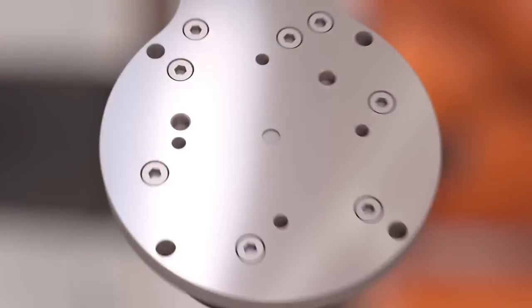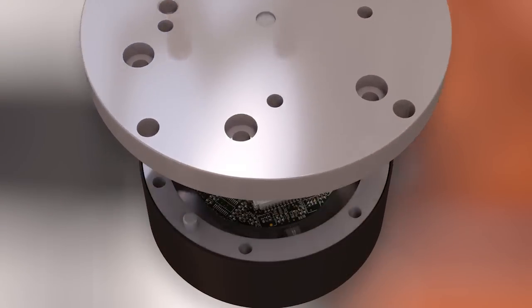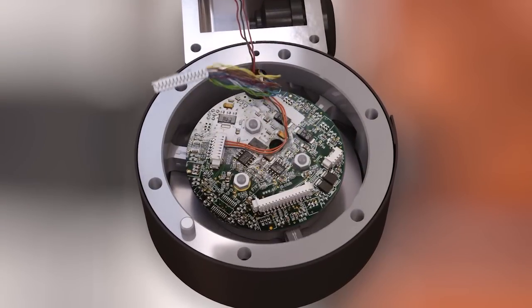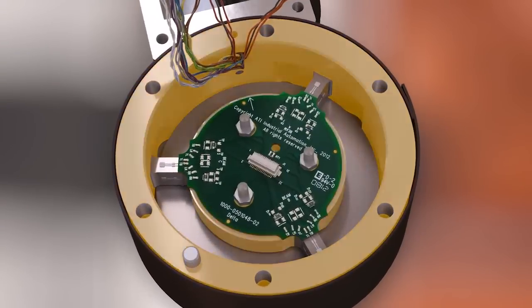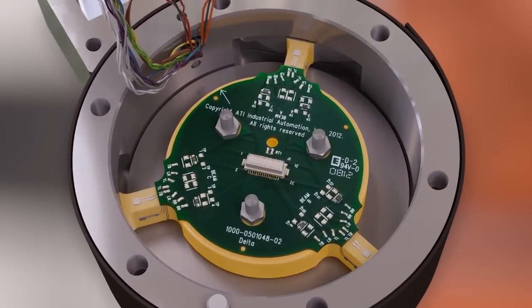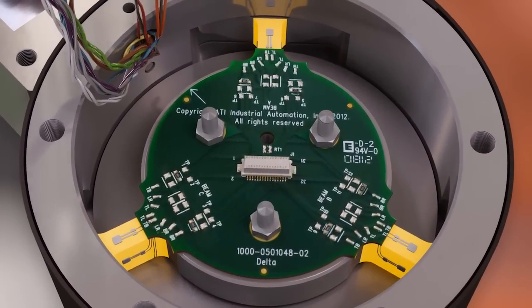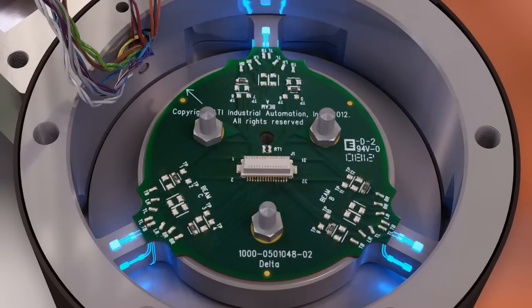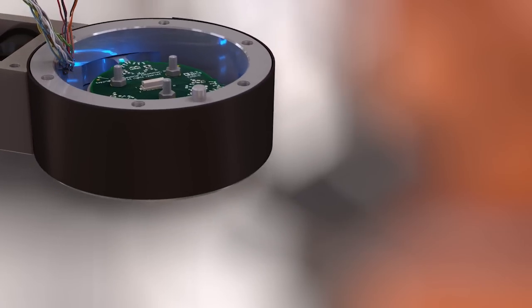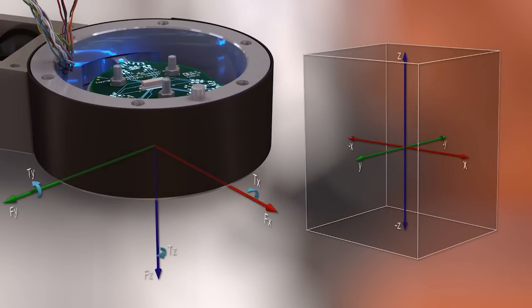When you look inside the ATI force torque sensor, you can imagine it resembles a wheel with an outer wall, with an inner hub, with spokes or beams connecting them. Each beam has four silicon strain gauges that function in pairs to form half bridges. The output of the transducer is six channels of strain gauge voltages. The output is digitized and then converted to forces and torques through a matrix calculation.